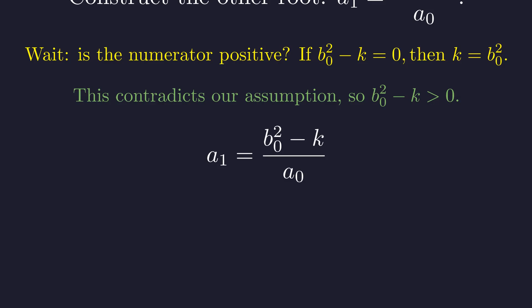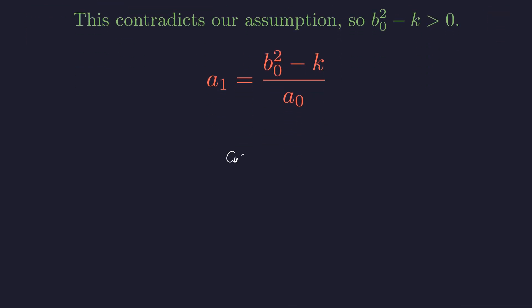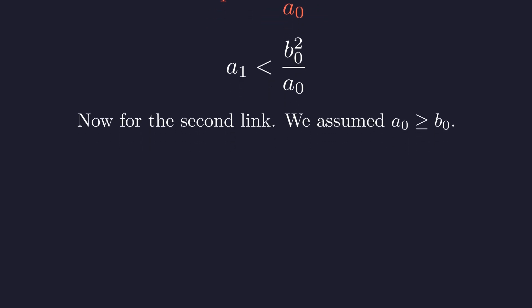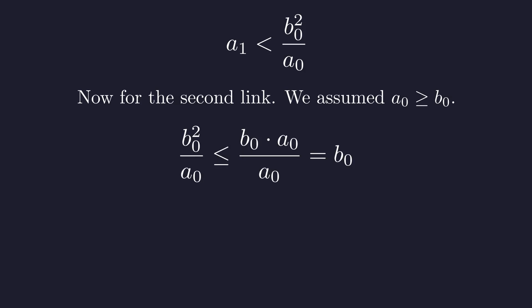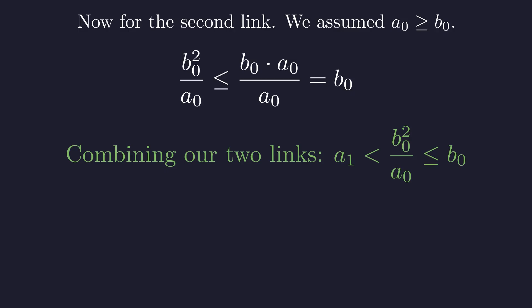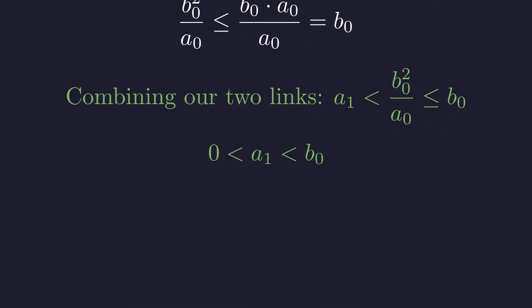Now we analyze the size of a1, starting from its definition. Because k is a positive integer, the numerator is strictly less than b0 squared. This gives us the first link in our chain: a1 is strictly less than this fraction. Next, we use our critical assumption that a0 is at least b0. Since b0 is at most a0, replacing one factor in the numerator shows that this fraction is at most b0. Let's put those two pieces together. a1 is less than this fraction, which in turn is at most b0. This proves that a1 is a positive integer that is strictly smaller than b0.